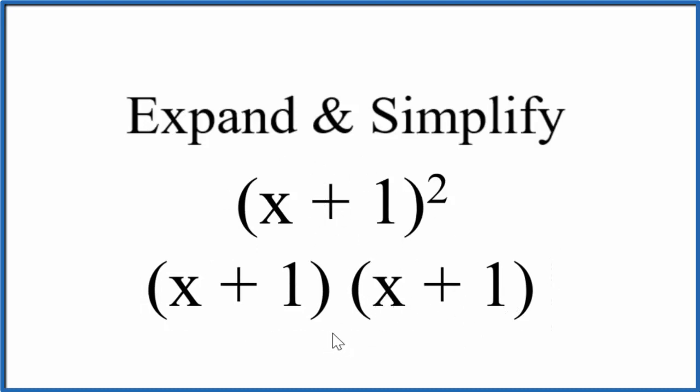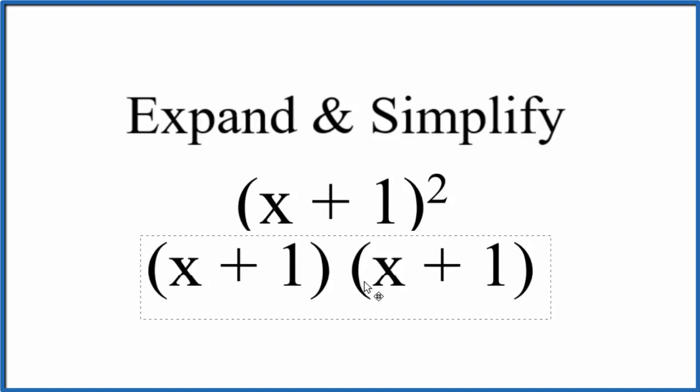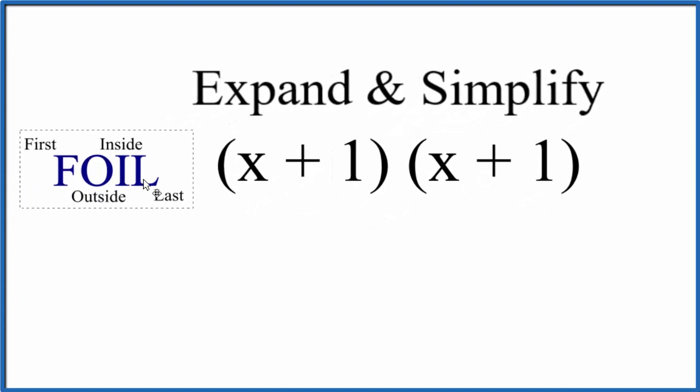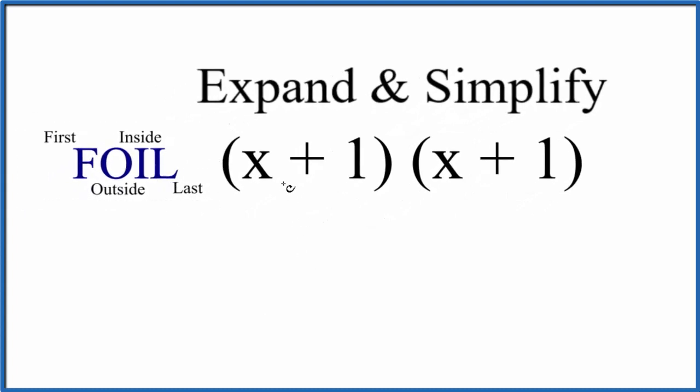It's the same thing as this, but now we can expand and simplify using the distributive property a little bit easier. So let's use the FOIL method. Just so we remember what we need to do here: essentially we're multiplying this term times everything here, and then this term times everything here.